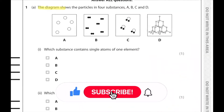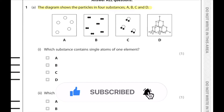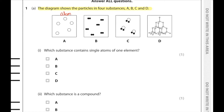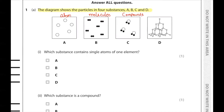Question number one a: the diagram shows the particles in four substances a, b, c, d. In a, we can see only single circles, so they are representing single atoms — they're monoatomic. In b, we are looking at molecules, which are similar atoms joined together by sharing electrons. In c, we are looking at compounds, and in d we are looking at a macromolecule — a giant structure, specifically diamond.